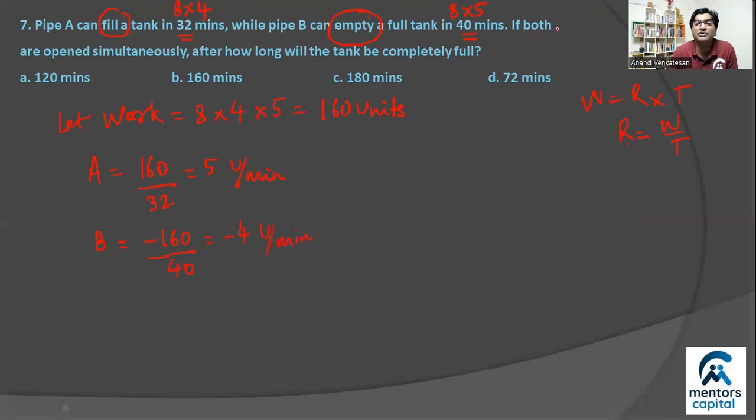B on the other hand is emptying a full tank, which means it's a drain, so B's rate, B does negative 160 units of work in 40 minutes, remember emptying, that means B's rate will be minus 4 units per minute. Now question is saying both are simultaneously opened, when will the tank be completely full? So combined rate will be A plus B, that is nothing but 5 minus 4, 1 unit every minute. So time we know from the formula is equal to work upon rate, so work is nothing but 160 minute units and time taken is 1 unit every minute, which means it will take 160 minutes. So correct answer is option B.